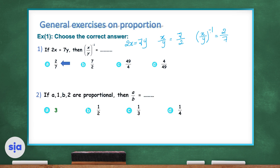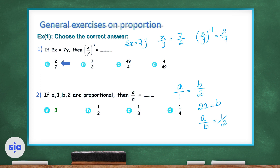Question 2. If A, 1, B, and 2 are proportional, then what is A over B? Since they are in odd proportion, then A over 1 is equal to B over 2. Then 2A equals B. So the correct choice is choice B.